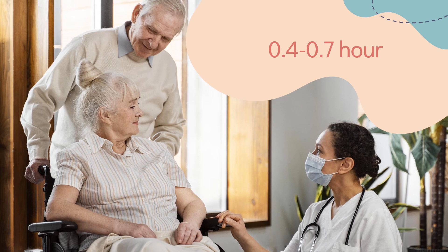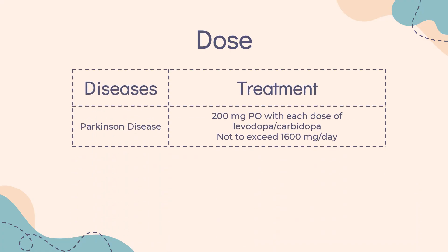Half-life: 0.4–0.7 hours. Dose for Parkinson's disease: 200 mg orally with each dose of levodopa/carbidopa, not to exceed 1,600 mg per day. See also combination with levodopa/carbidopa.